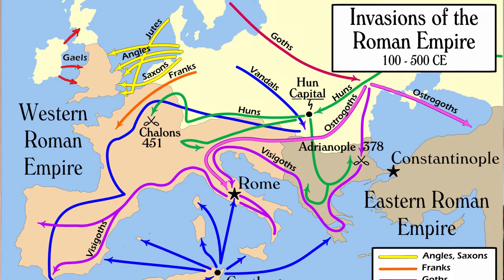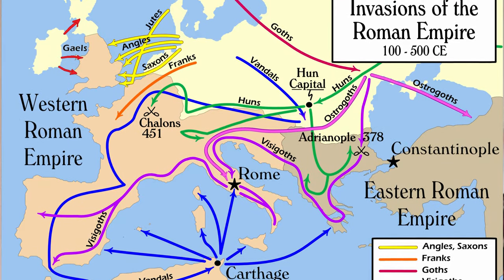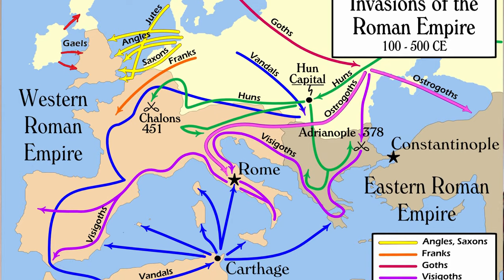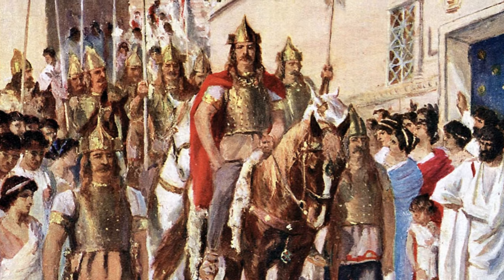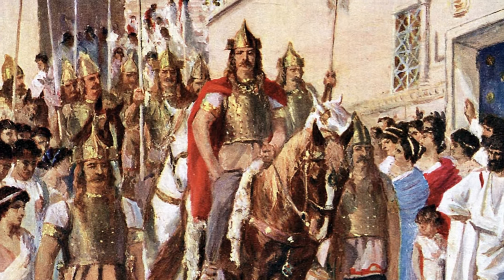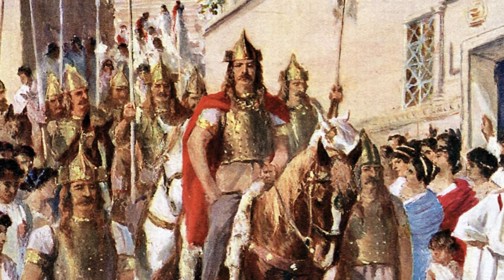Some of these groups were the Huns, the Goths, and the Franks. In 410 AD, the Visigoths, a Germanic people, once again sacked Rome.